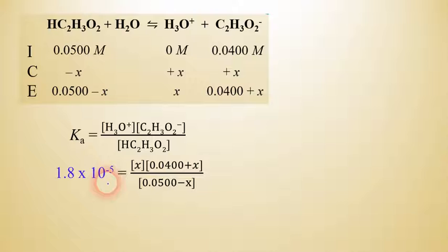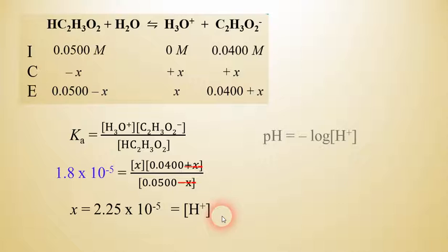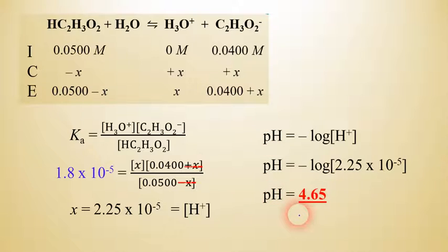In a homework problem, that would most likely be given to you. We notice that this algebra problem is a little bit tricky because if we were to do the distributive property here and solve for this, we'd have a quadratic equation. And we try to avoid those. So I'm going to take the plus x right here and the minus x right there and obliterate those. I'm going to ignore them, assuming that those are pretty small compared to the numbers that they're being added or subtracted from. So when we do that, we can cross multiply. And I'm getting a value that x equals 2.25 times 10 to the negative fifth. And the significance of x up here is that that is the H⁺ concentration. So we know that if we take the negative log of that value, we can get the pH pretty easily. So we can take the negative log and find that the pH of this mixture is 4.65.